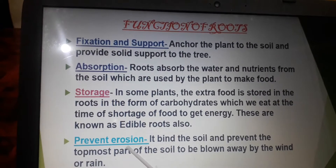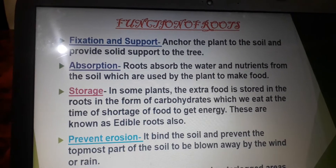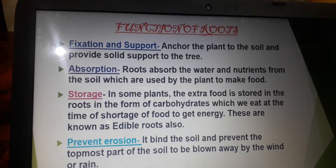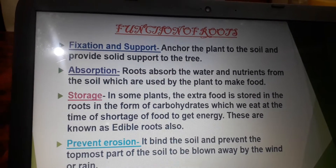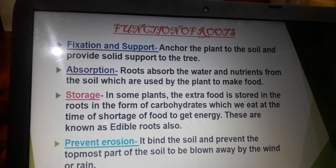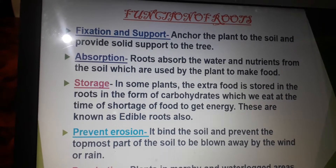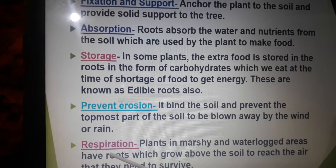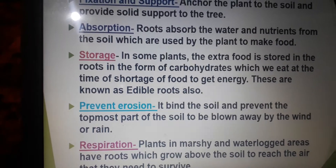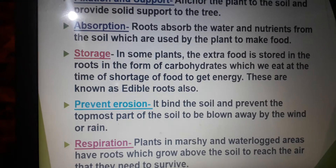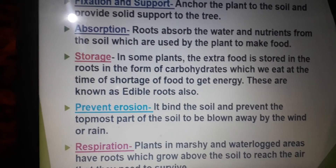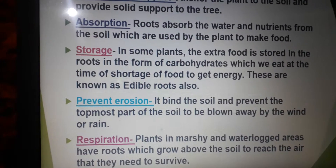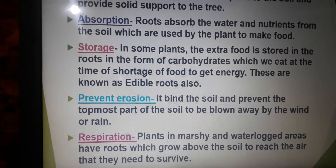The next point is preventing erosion. Heavy rain and strong wind wash or blow away the topsoil — this is called soil erosion. Roots bind the soil and prevent soil erosion. The next function is respiration. Plants in marshy and waterlogged areas grow roots above the soil to reach the air they need to survive. These roots help the plant in respiration.